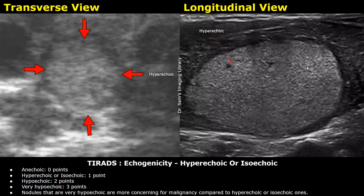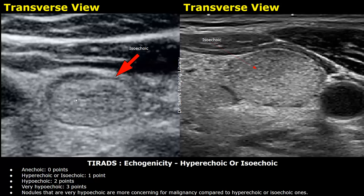Isoechoic nodules have echogenicity similar to that of normal thyroid tissue — the same brightness. Isoechoic echogenicity is also given one point.